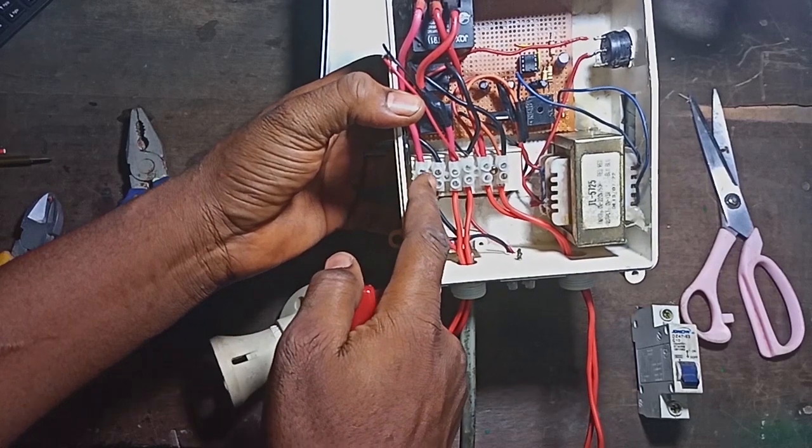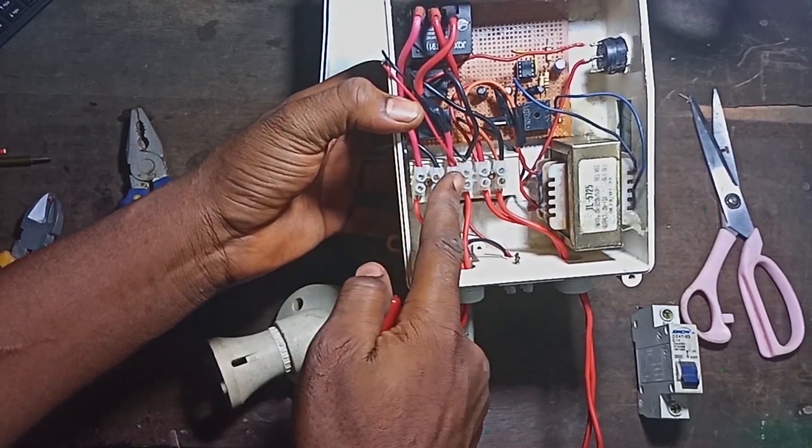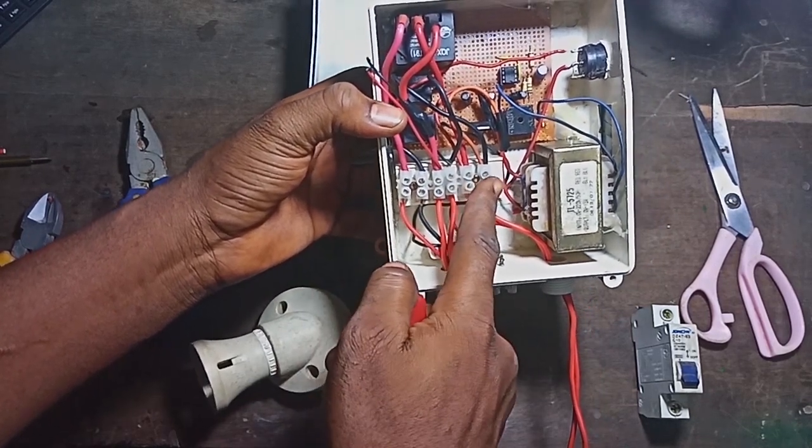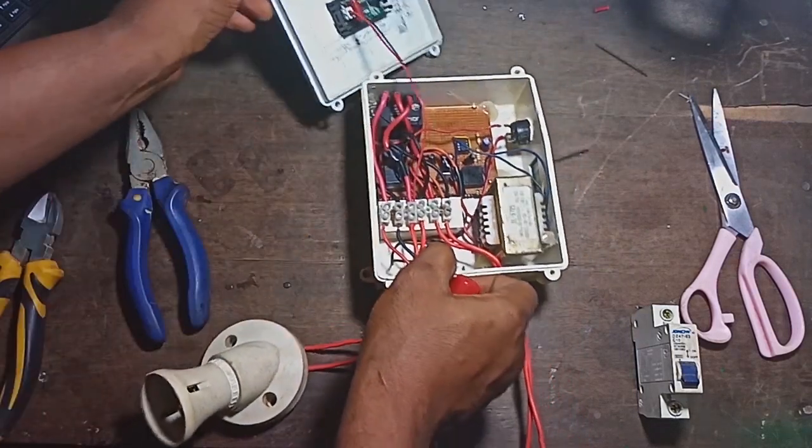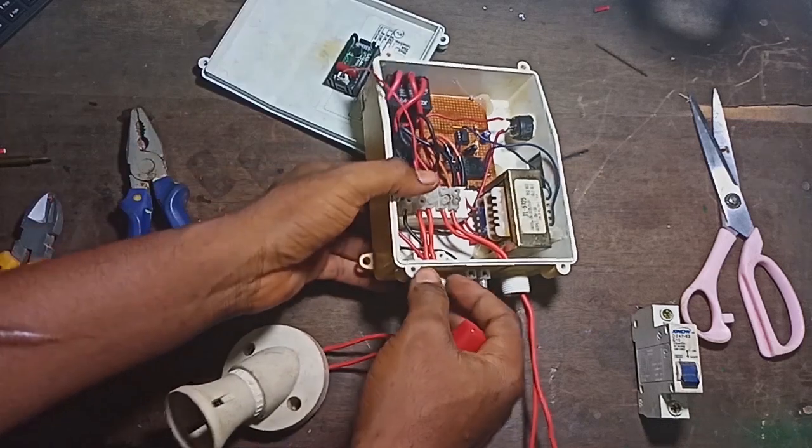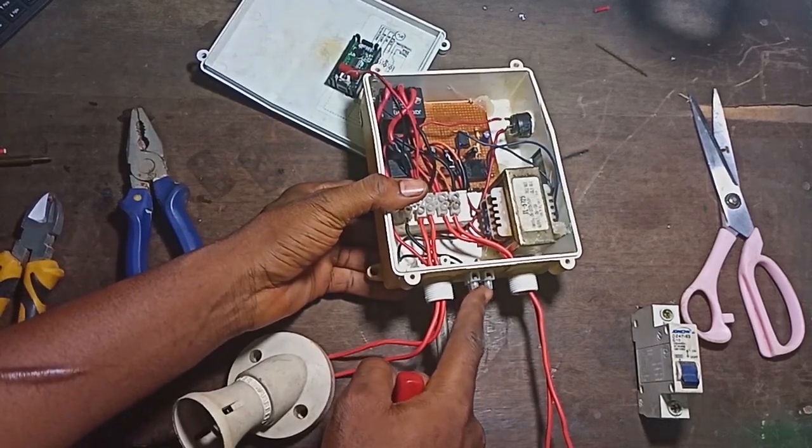The system works in three sections. The first terminal is for the generator, the second terminal is for the load, and the third is for input from the mains. Right here is the control switch for the generator.